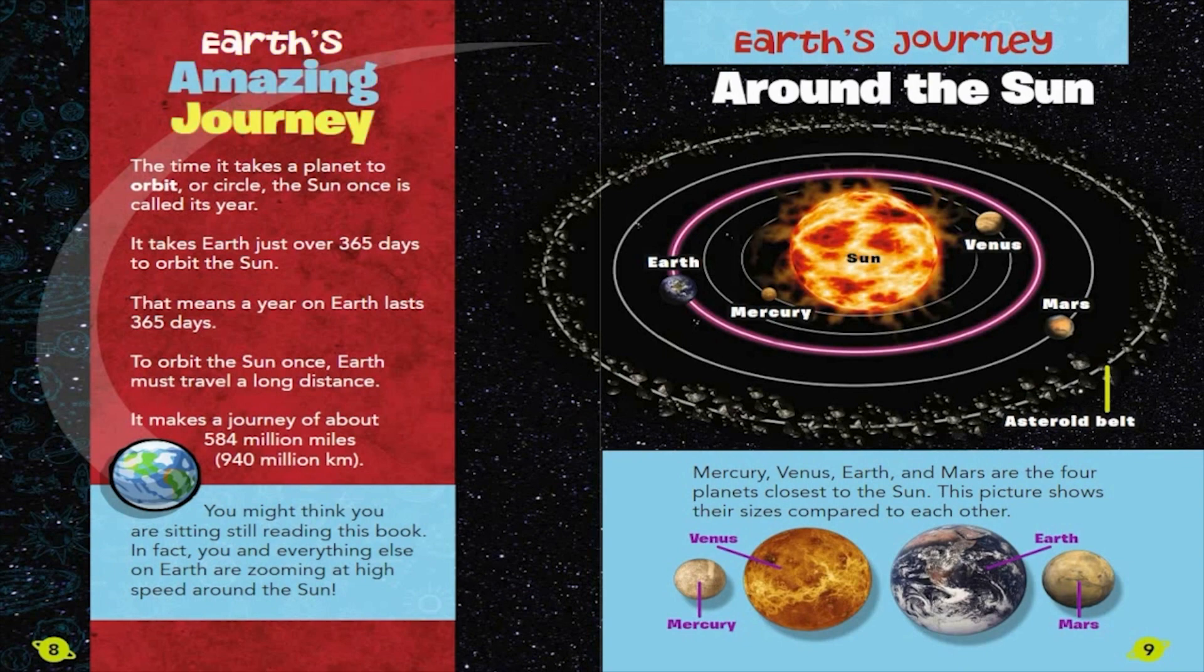Earth's Amazing Journey. The time it takes a planet to orbit, or circle, the Sun once is called its year. It takes Earth just over 365 days to orbit the Sun. That means a year on Earth lasts 365 days. To orbit the Sun once, Earth must travel a long distance. It makes a journey of about 584 million miles, 940 million kilometers.